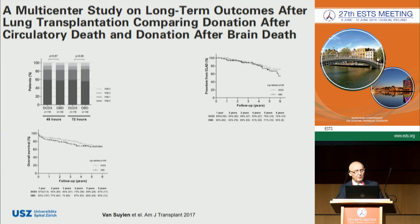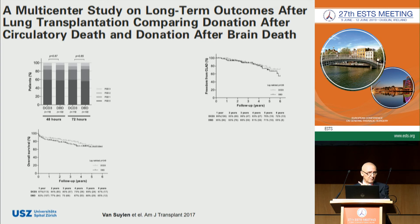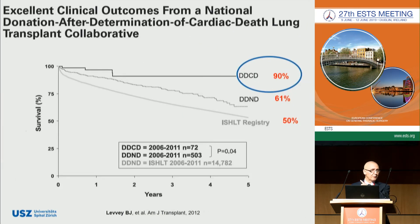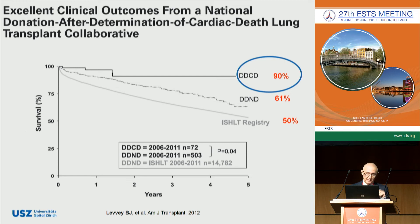The Netherlands has an excellent DCD program, with over 30% DCD lung donor utility rate. A multi-center study from the Netherlands including 130 cases per arm showed no difference in PGD, CLAD-free survival, or overall survival between DCD and DBD groups. A paper by Levy reported the Australian experience with 72 recipients from category three DCD donors, and the 90% five-year survival reported from this series was the best published from such donors.